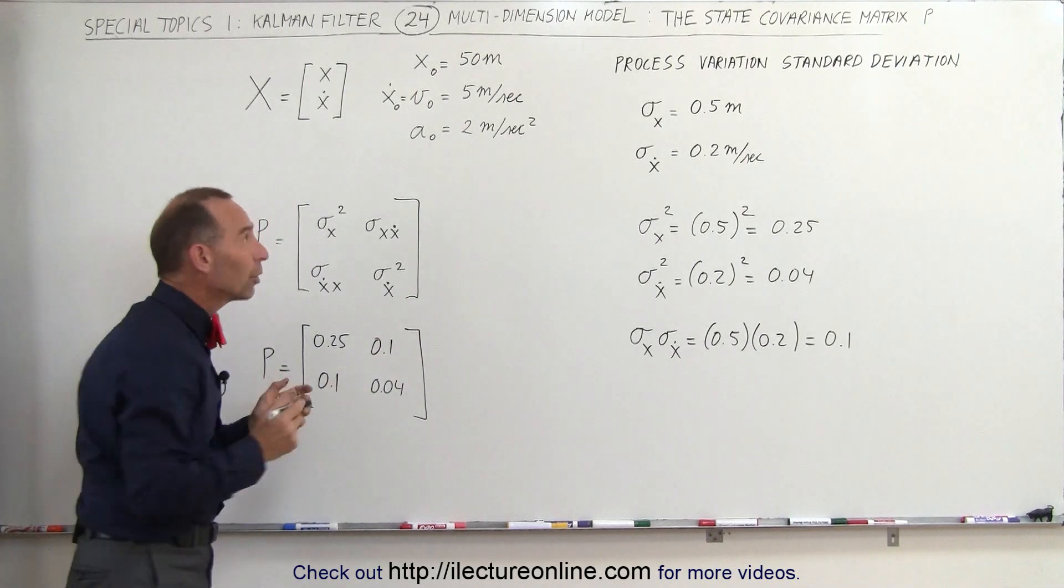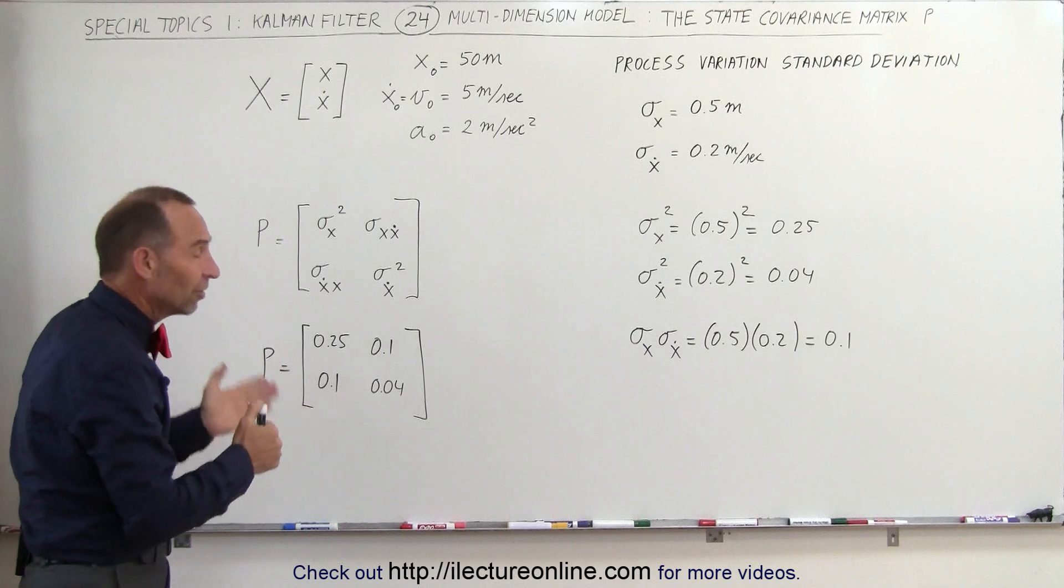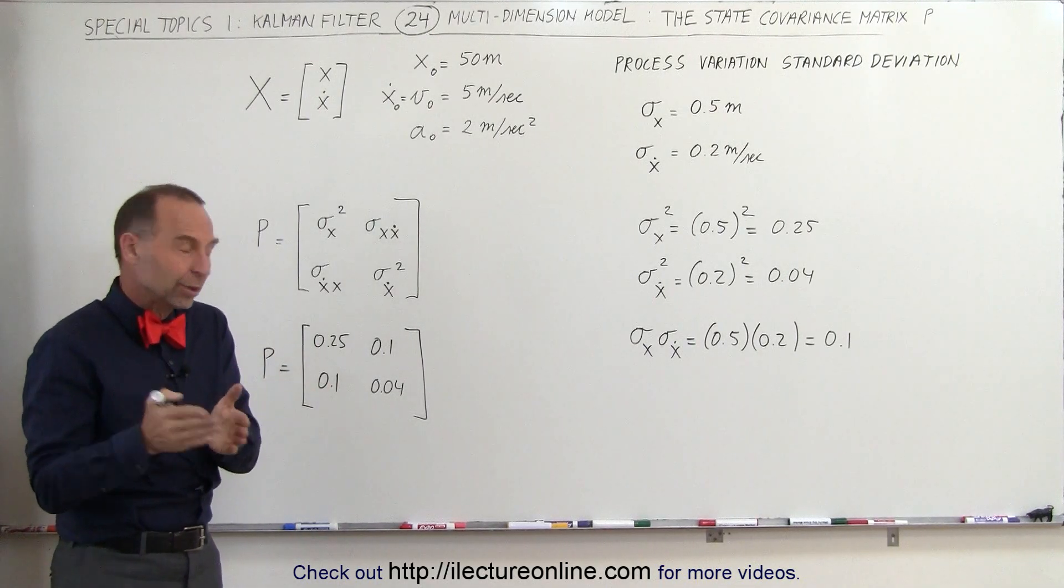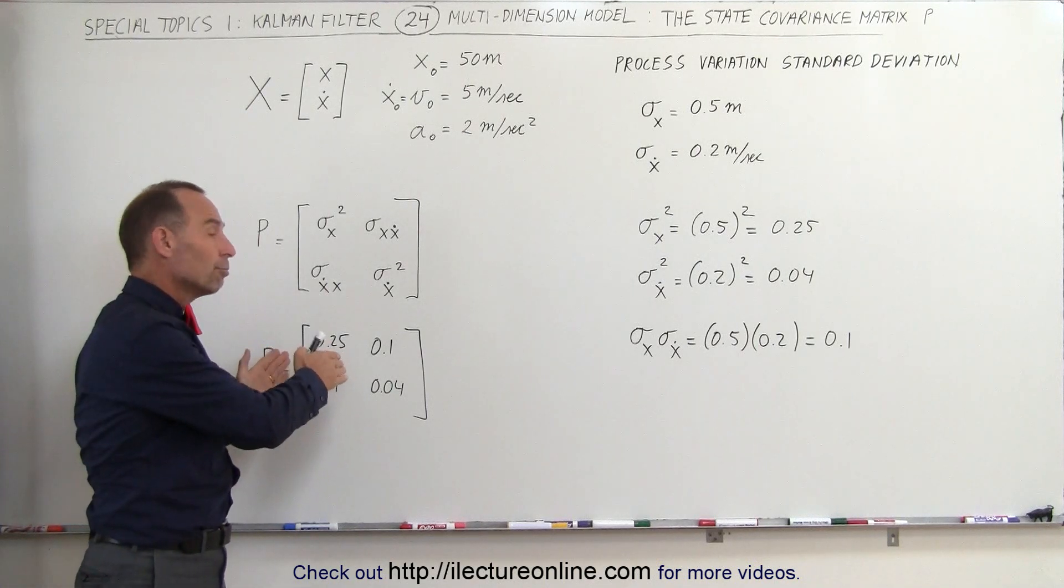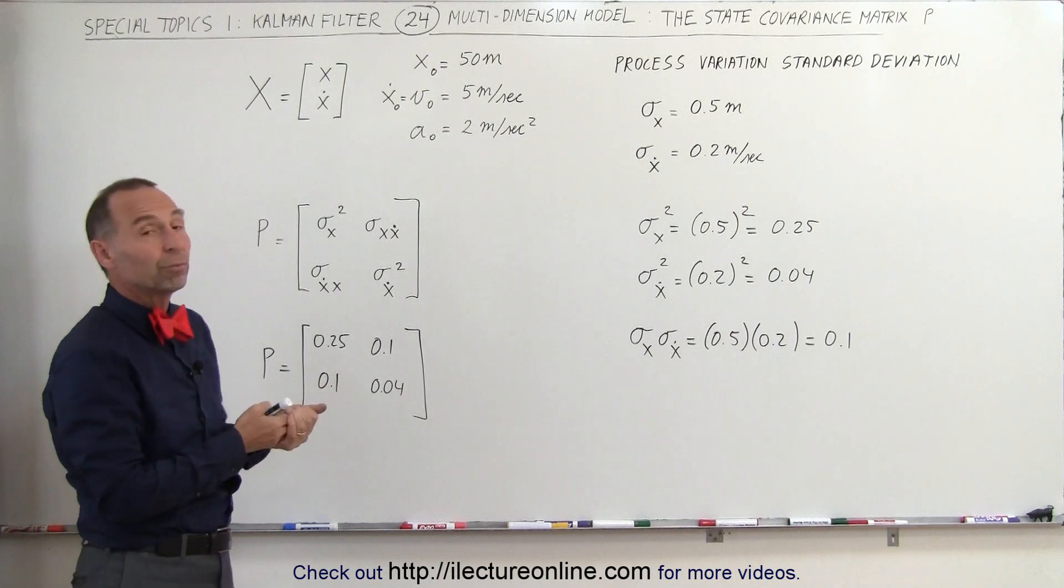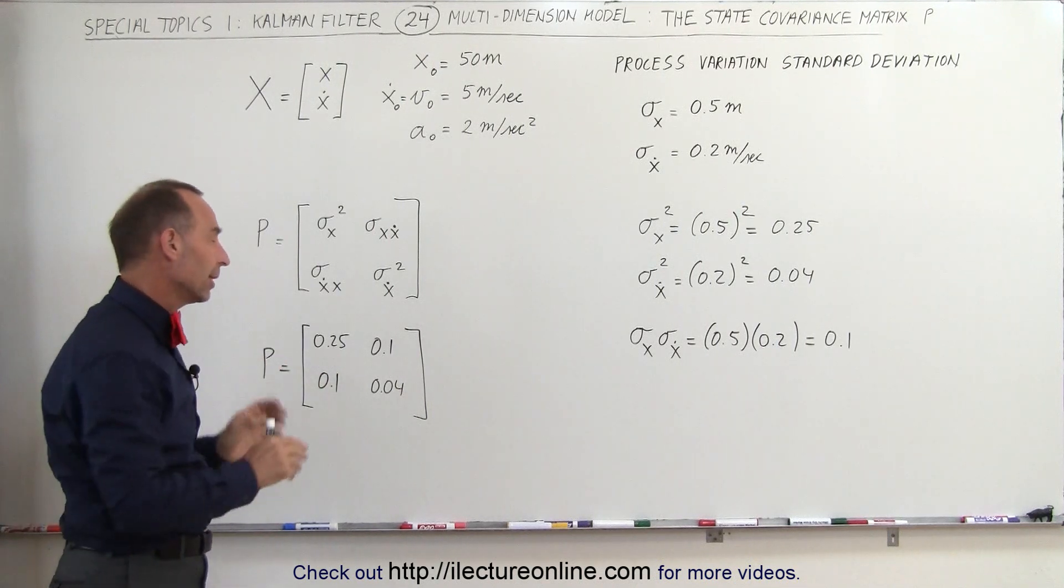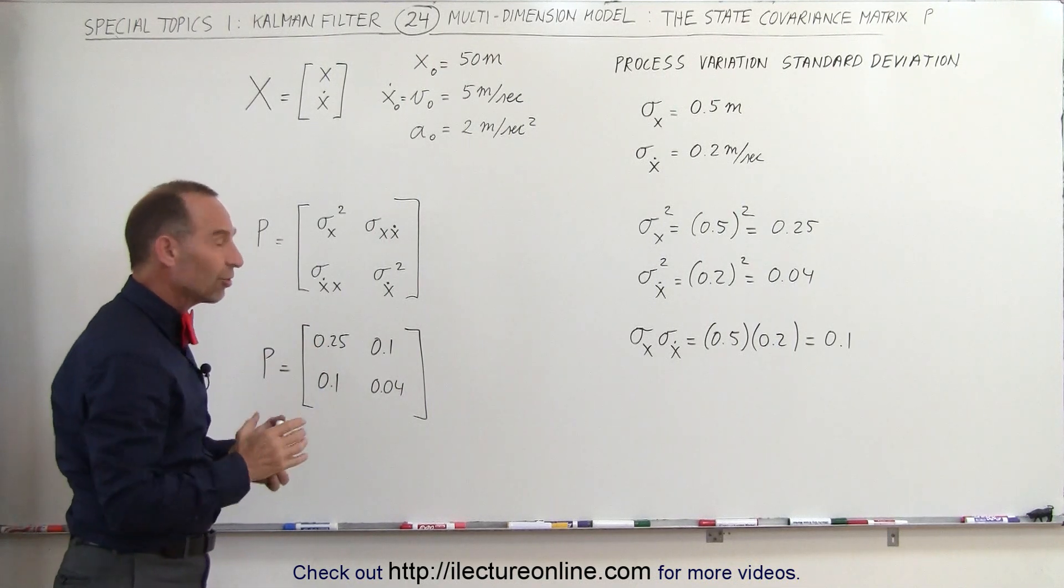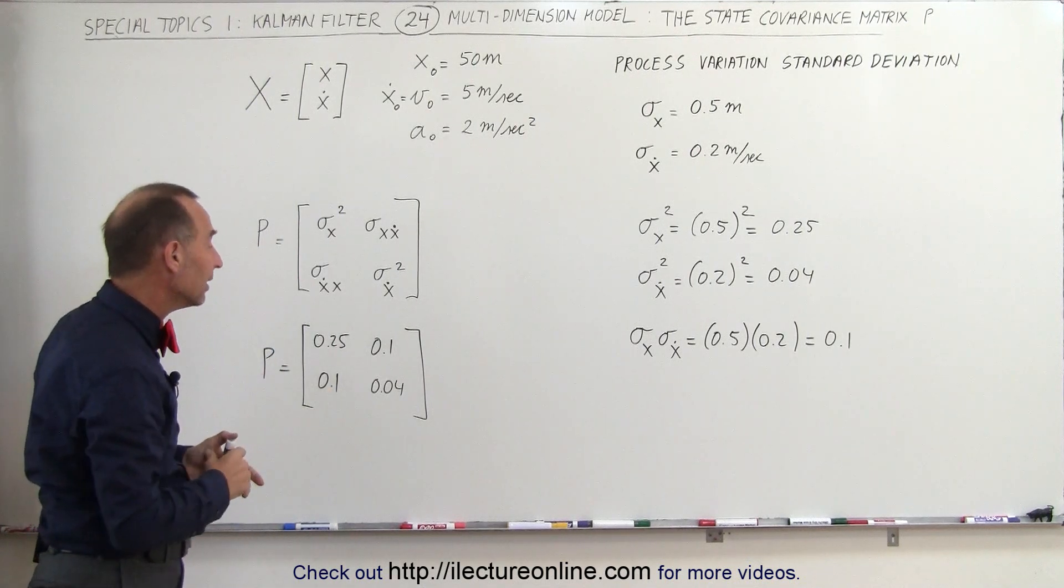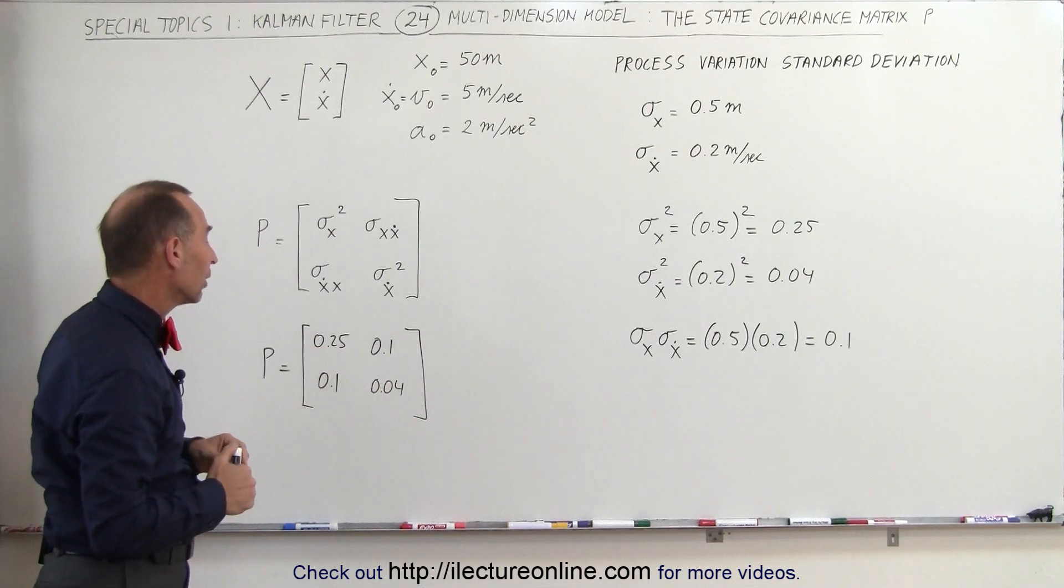This gives us the state covariance matrix. This is the matrix that will help us figure out how much emphasis we need to place with the Kalman gain on the predicted value, or how much emphasis we should place on the measured value. The state covariance matrix indicates the kind of error we can expect in the processing of the data.